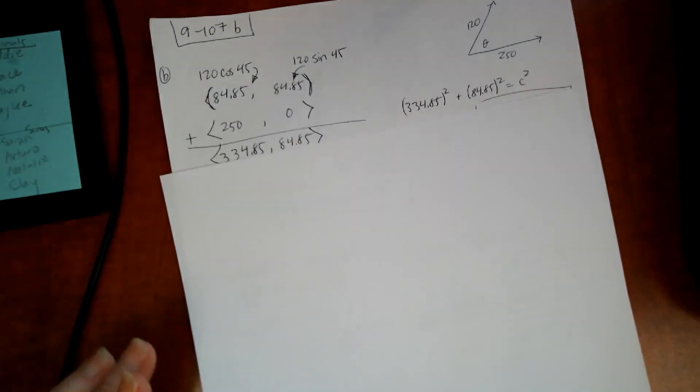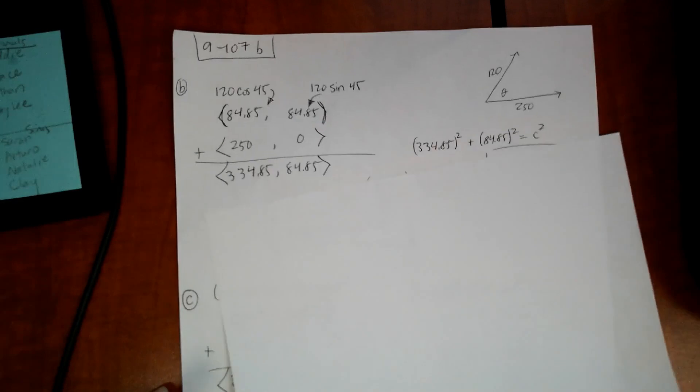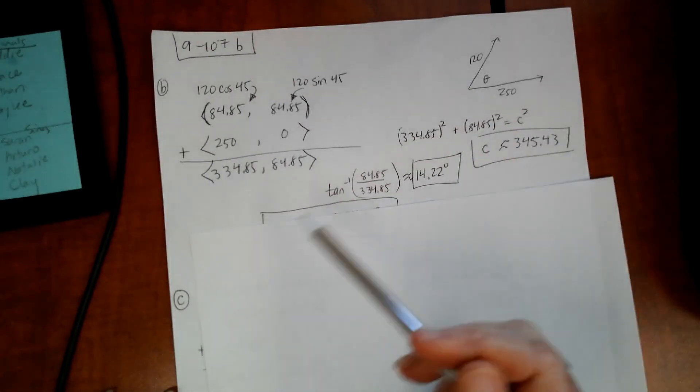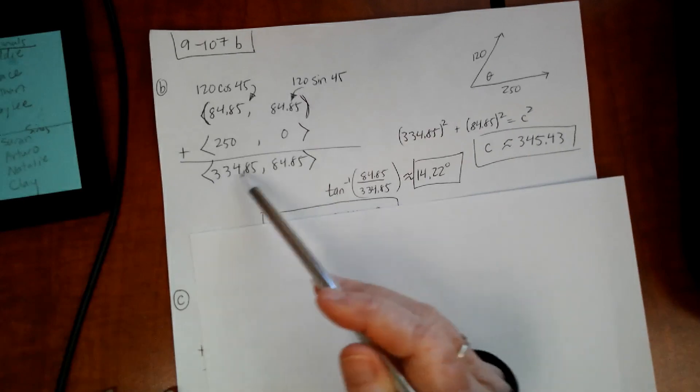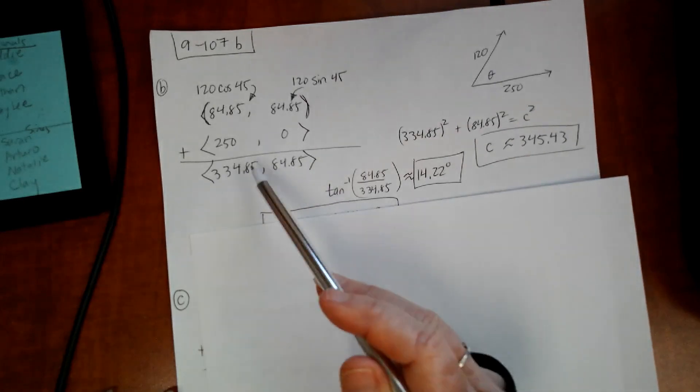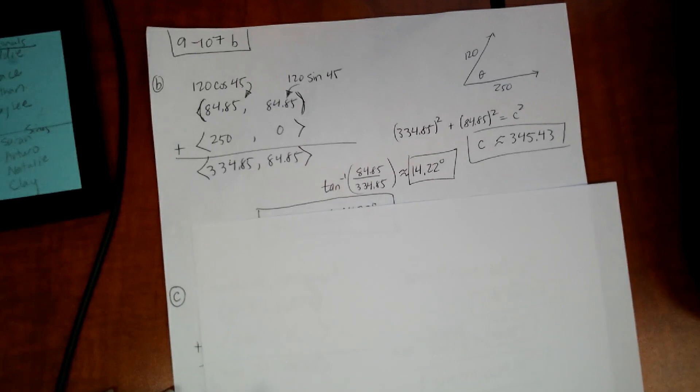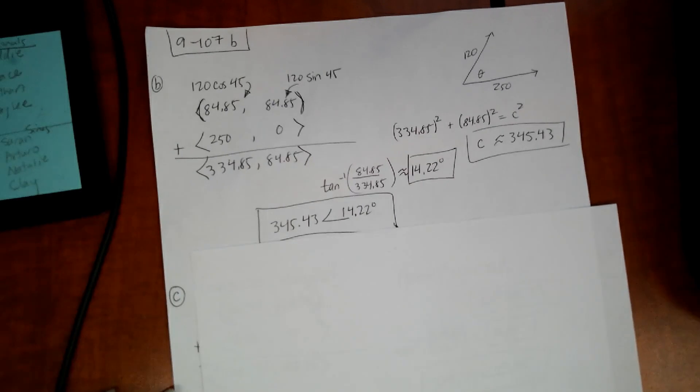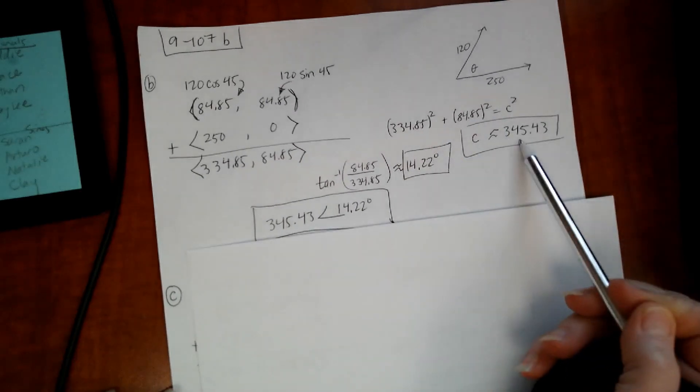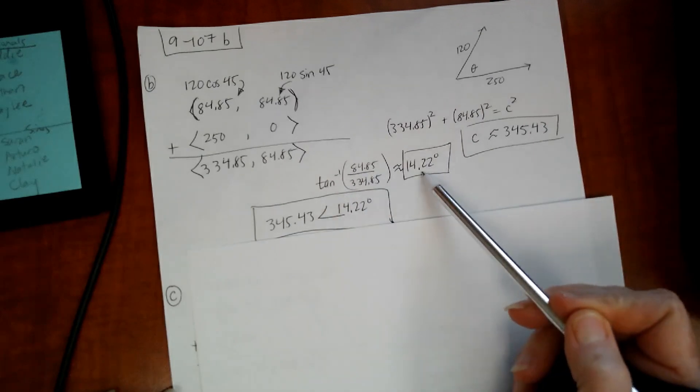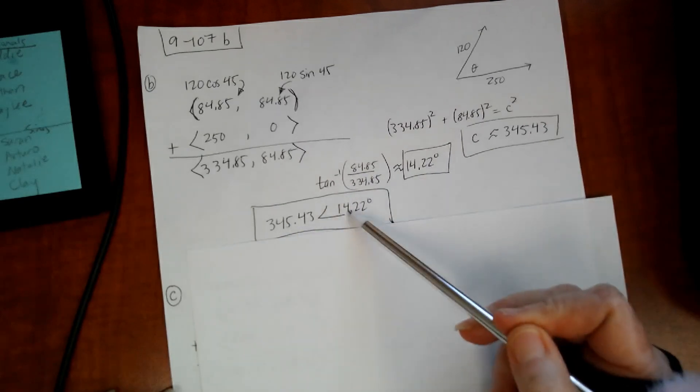I remembered that I got the horizontal component by using cosine, and I got the vertical component by using sine. Then I'm going to add that to this vector, the 250 comma 0. That gives me the resultant vector, but I want to find the magnitude and direction. I find the magnitude with Pythagorean theorem, and I find the direction with inverse tangent, just like I did on the last problem, and then I just rewrote it like this.